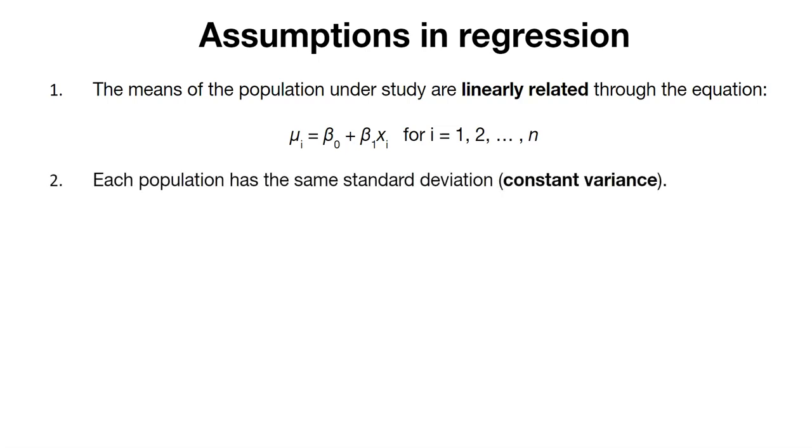A second assumption is what we call the assumption of constant variance. That is, each population has the same standard deviation. Now to write this out, we could say that sigma is equal to the sigma one, sigma two, and sigma n. So we can say that the population has a constant variance for all levels i, one through n.